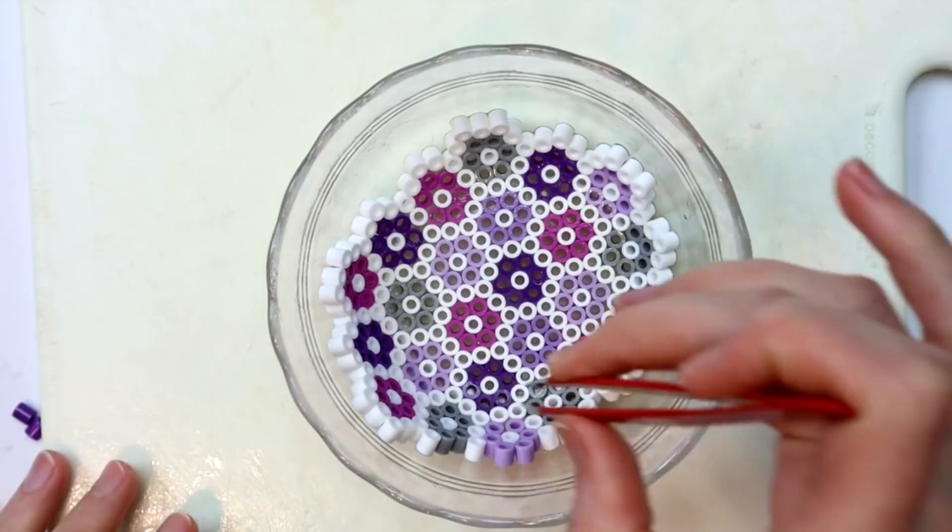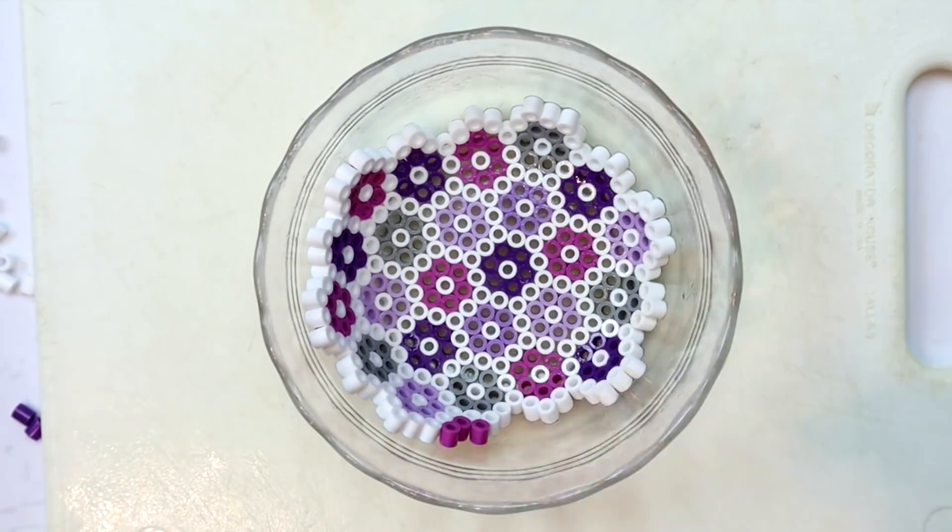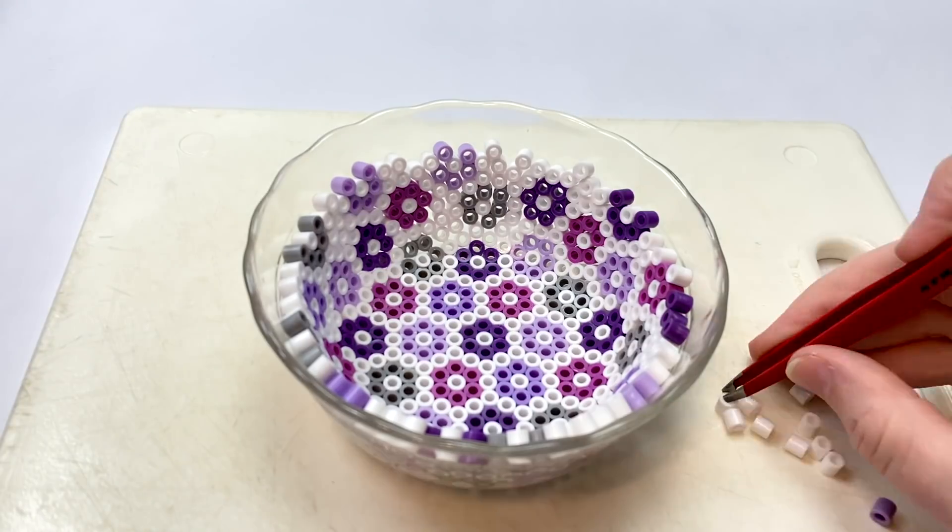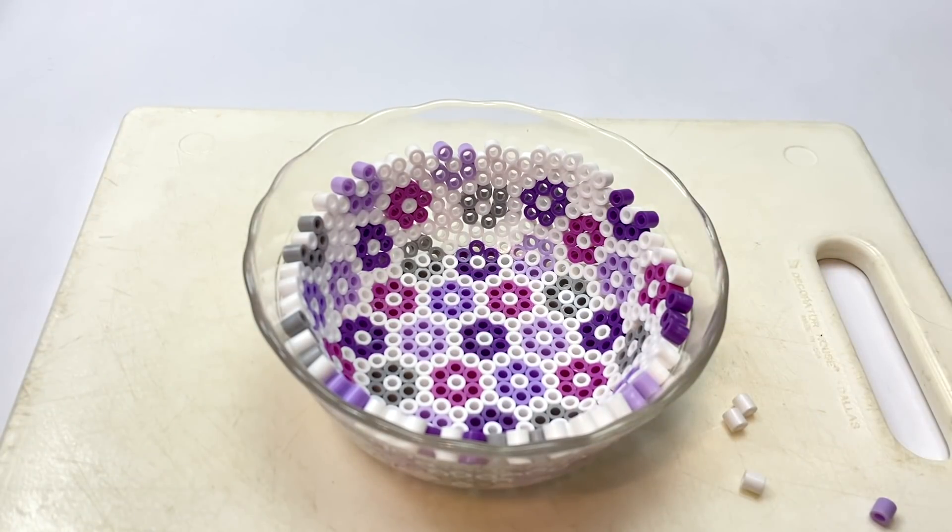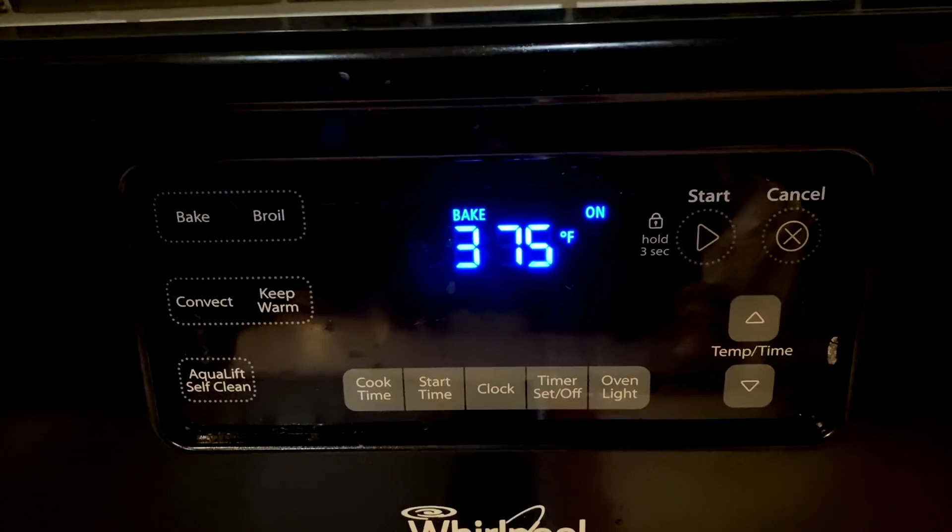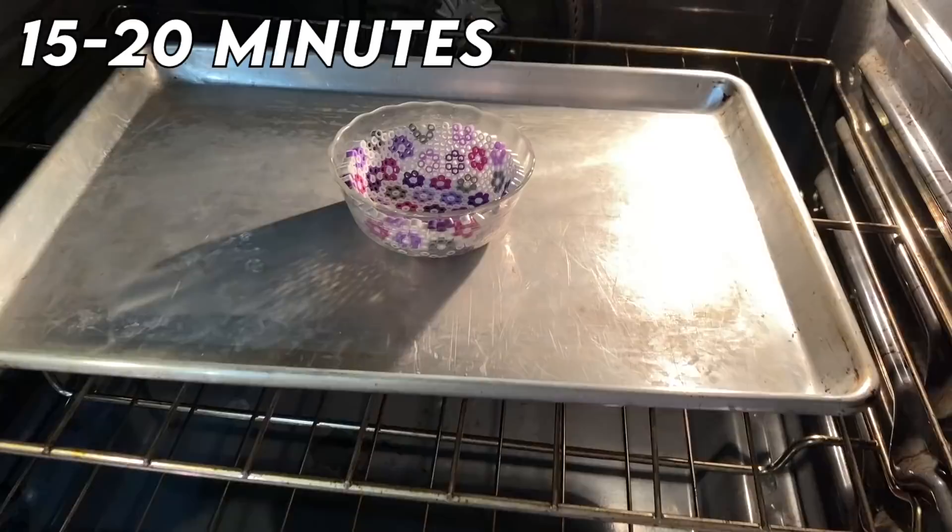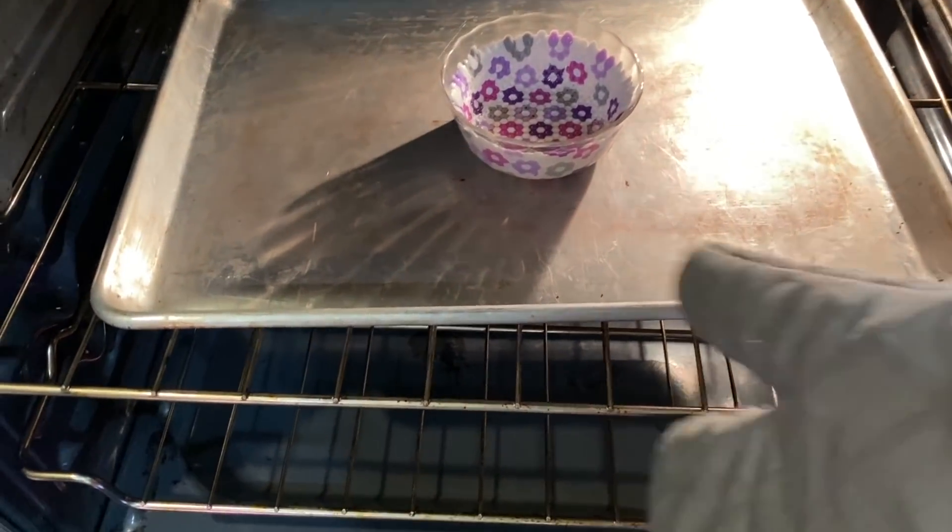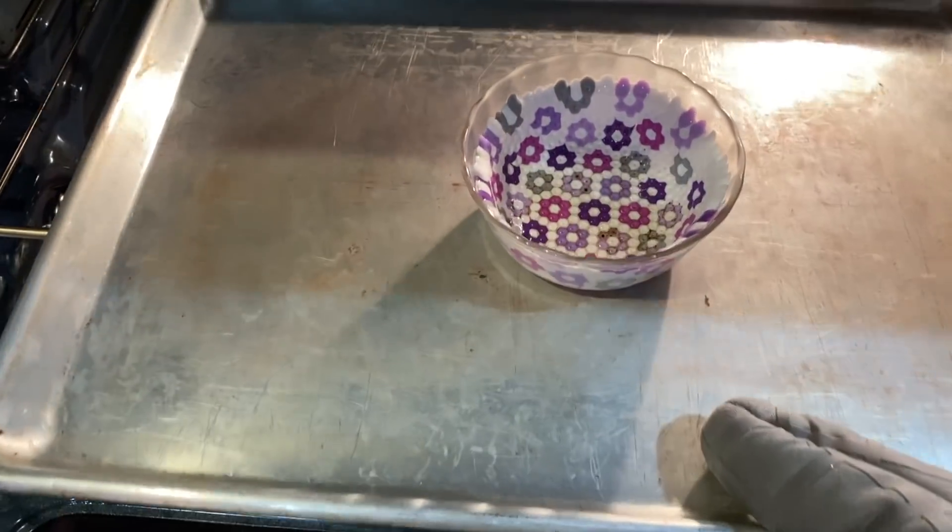By using the cooking spray, it'll help the beads stick to the sides of the bowl before you bake it, and it will also help you remove everything after you bake it. When you're happy with your design, put it in the oven at 375 degrees for 15 to 20 minutes. When I took mine out of the oven, I was kind of freaking out a little bit because I thought that I like burned it or something, but the reason that it looked like this was because I used a little bit too much cooking spray.